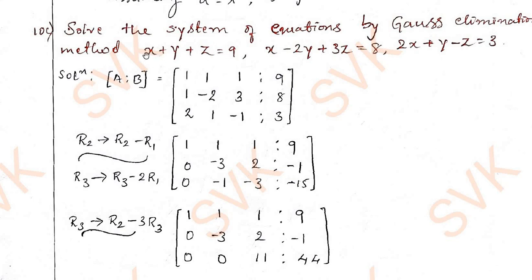A is nothing but the square matrix from the coefficient of x, y, z. We are going to collect the elements of coefficients of x, y, z. That is what the matrix A. And matrix B will be a constant values called 9, 8, 3. It will be implemented in column wise. That is what I have written.